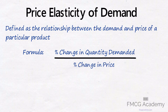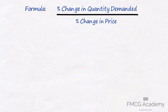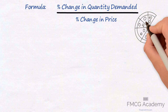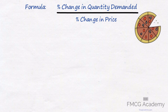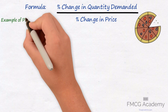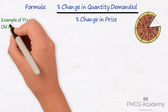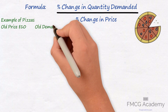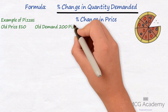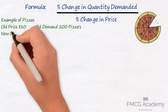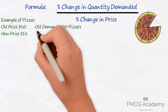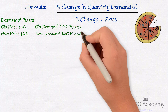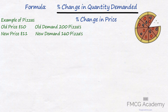Let's go through a very simple example using pizzas. The old price for pizzas was $10 and the old demand was 200 pizzas. The new price is $11 and the new demand has dropped to 160 pizzas.